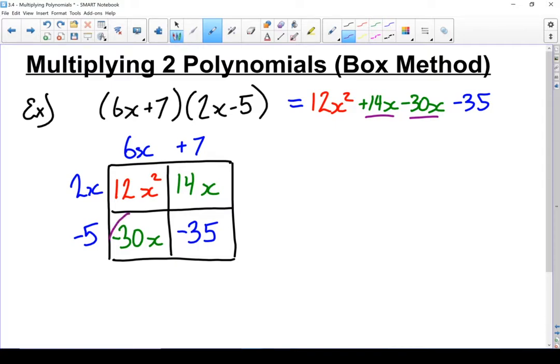Once you get good at this, you can probably look right at the box and you can see that those two terms were like terms. And it's often going to be that pair that are like terms. Let's put those together. Now 12x squared, I don't have any other like terms, so I'm just going to write that down as 12x squared. But that pair, plus 14 and minus 30, should give me minus 16x. And then I've got a minus 35. And there I have my two polynomials multiplied out.